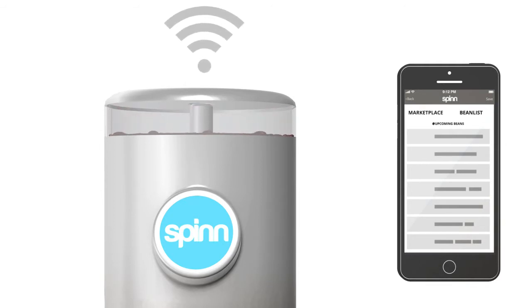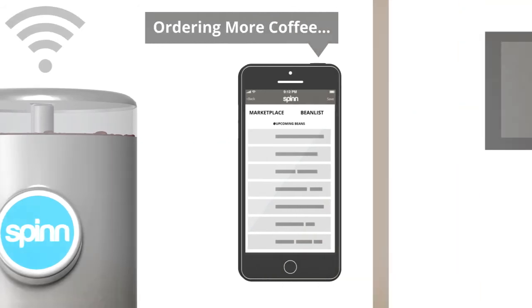So if you're running low on coffee, it will automatically order more from your bean list and your coffee will be delivered directly to your door.